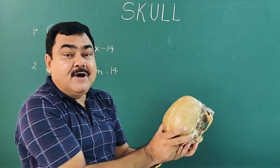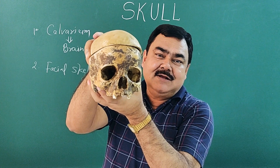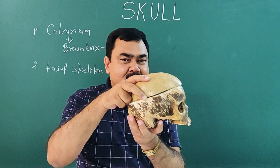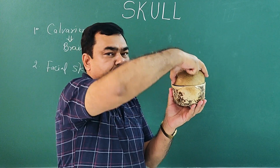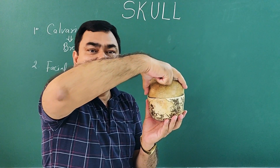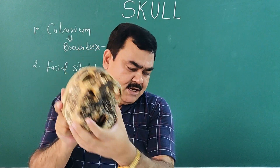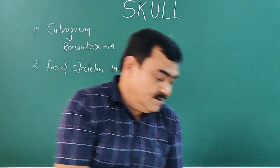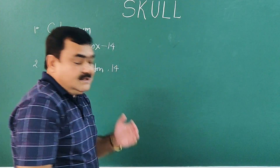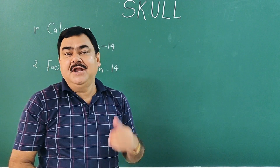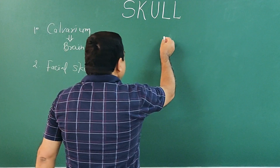If you see the skull from above, this is norma verticalis. If you see from the anterior side, this is norma frontalis. If you see from the side, norma lateralis. If you see from the posterior side, norma occipitalis. The inferior view is norma basalis. We will discuss each of these norma and then the interior of the skull.